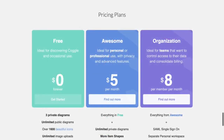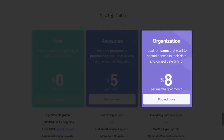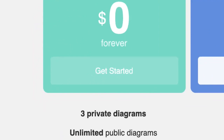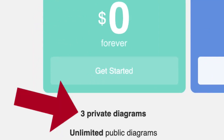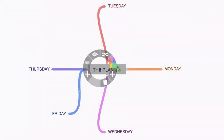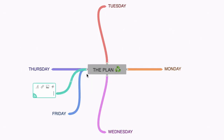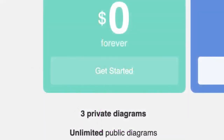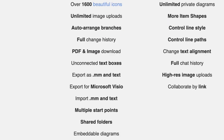The Koggle mind map tool has a free forever plan. There are also some paid plans, namely the Koggle Awesome plan and the Koggle Organization plan. The free plan does have some limitations — it only allows you three private diagrams — but you do get unlimited public diagrams.